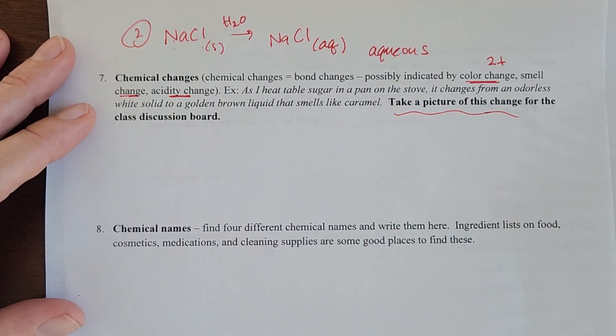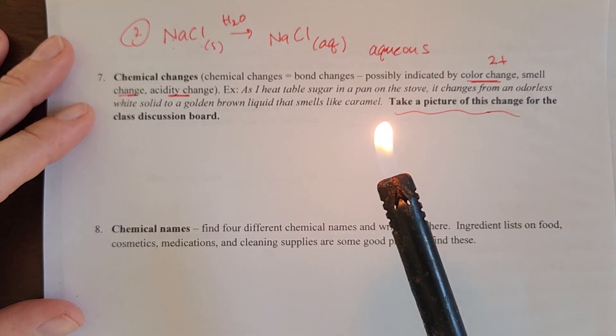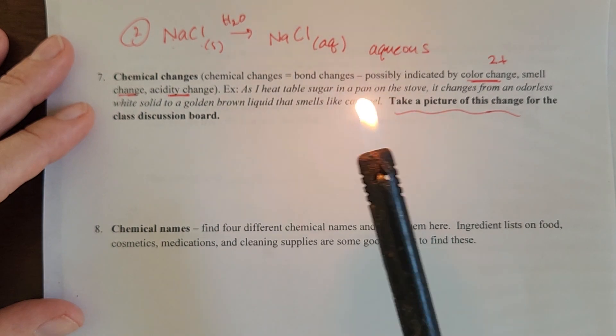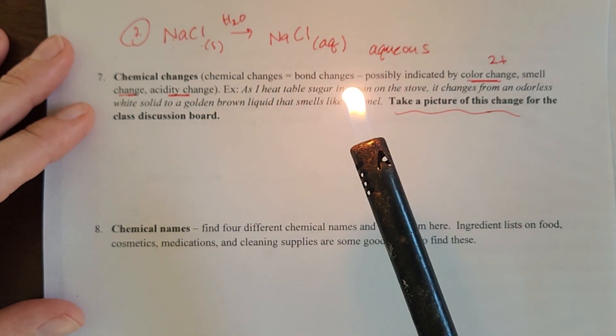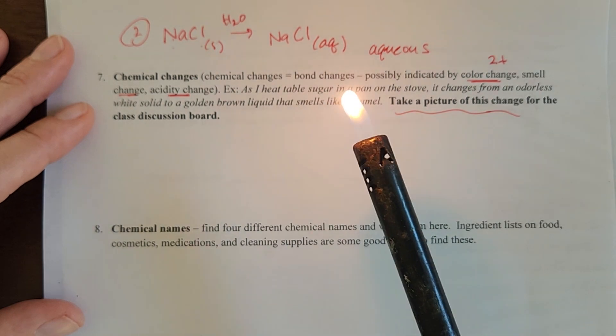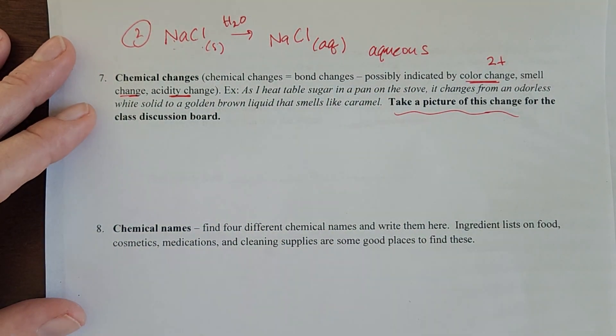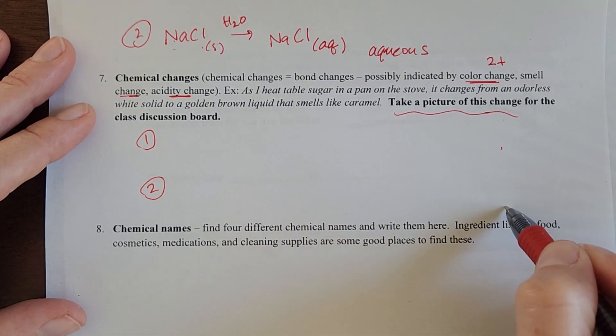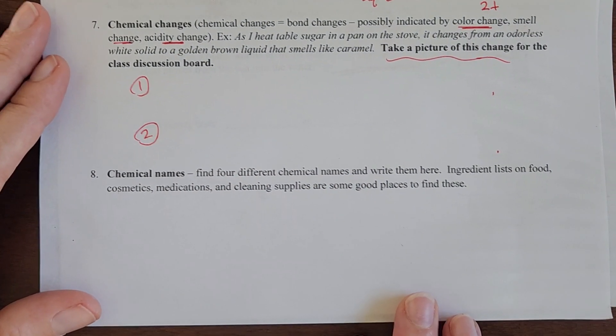You want to take a picture of this change also to post on the class discussion board. For example, back to my lighter, this is a chemical change. It doesn't have any smell, but when I see huge amounts of energy being given off as in light and heat, that's a good indicator also that you've got a chemical change happening. Again, follow the directions, two descriptions and then two pictures.